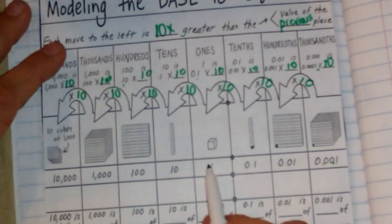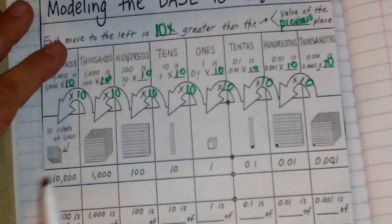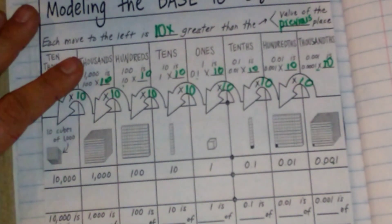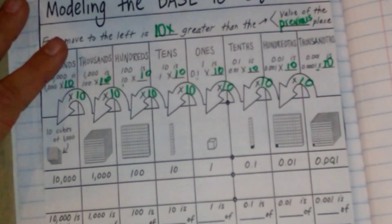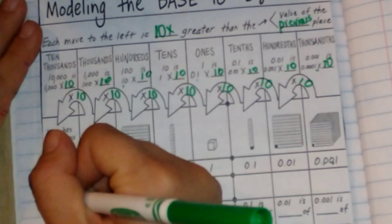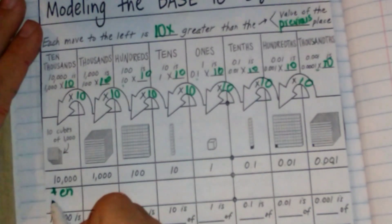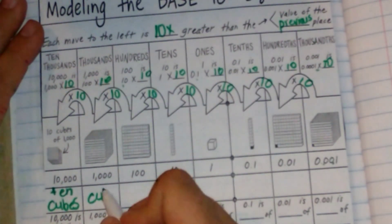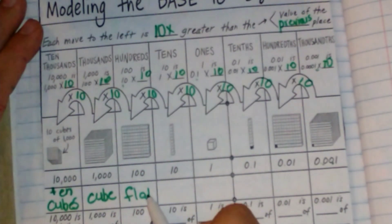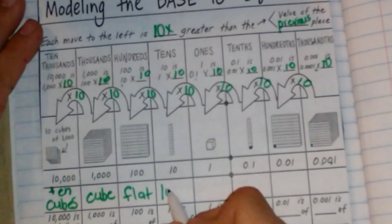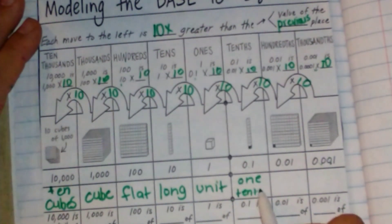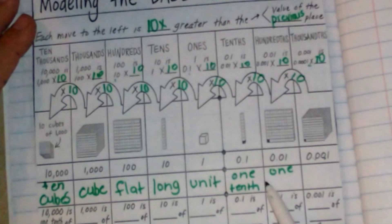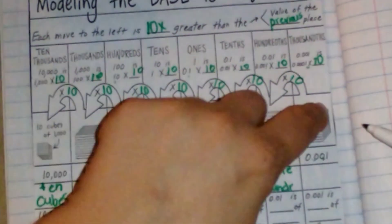Just like here — I move it over this way and I have a zero; I move it over this way, I add another zero, another place value. So this would be 10 cubes. This is called a cube. This is called a flat. This is a long, and this is one unit, one-tenth of a unit, one-hundredth, and one-thousandth. That's what I'm going to call those pieces here.